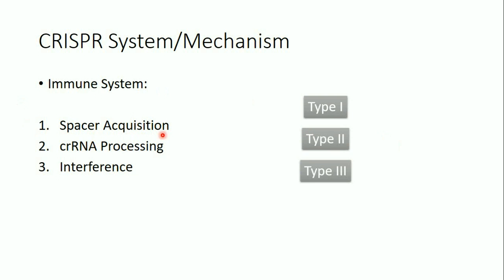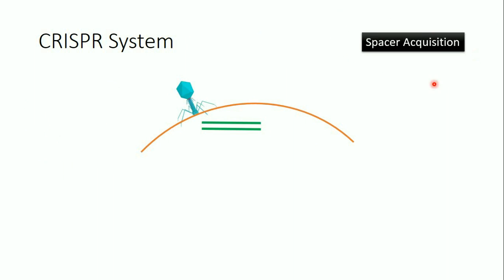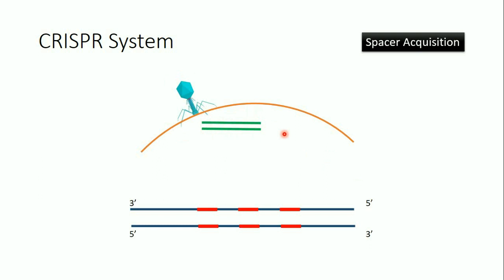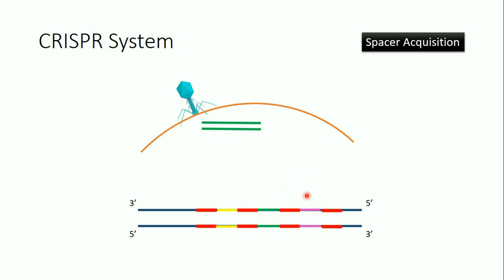Let's talk about spacer acquisition. This step is the same in all three types of CRISPR system. When the bacteriophage infects the bacterial cell for the first time, the bacterial cell chops up the viral genome and takes a piece of it, inserting this piece into the spacer DNA. The spacer DNA consists of pieces of different viral genomes that have previously infected the cell — each time a bacteriophage infects, a piece is taken and inserted.